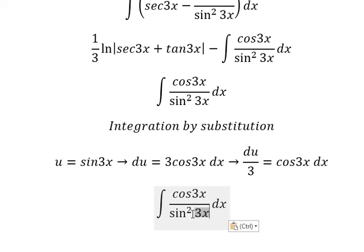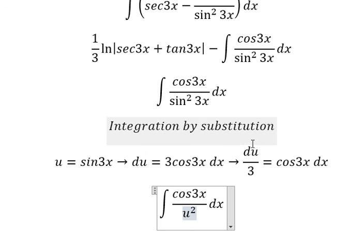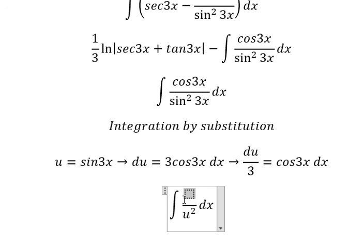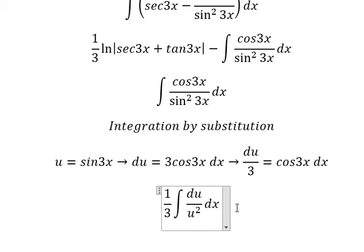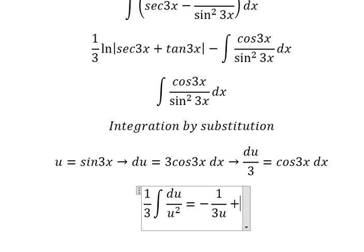This one, you got u squared. Cosine 3x dx we change by du over 3. The integration of this one, you got negative 1 over 3u, and we put c.